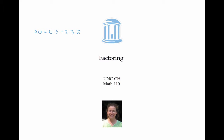As another example, we could factor the expression x squared plus five x plus six by writing it as x plus two times x plus three. I'll go over how to do the factoring, but for right now I just want to review how to go backwards — how to check that the factoring is correct — and that's just by multiplying out or distributing.